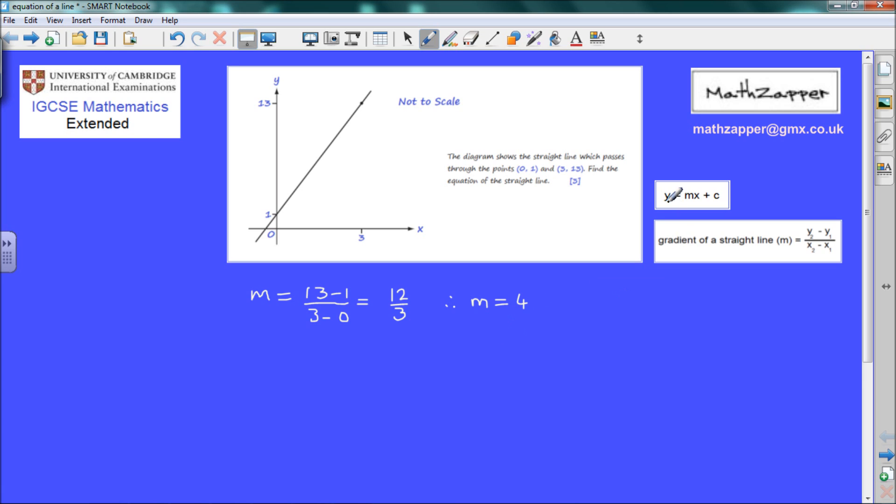We can now write y equals mx plus c with the value of m equals 4 included. So therefore we can now say y is equal to 4x plus some value c, which we will be finding next.